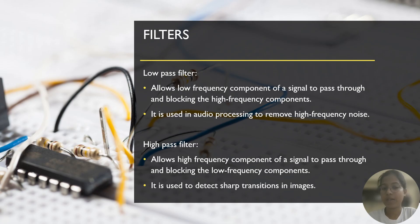Similarly, a high-pass filter allows high-frequency components of the signal to pass through it while blocking the low-frequency components of the same signal. It is used to detect sharp transitions in images.